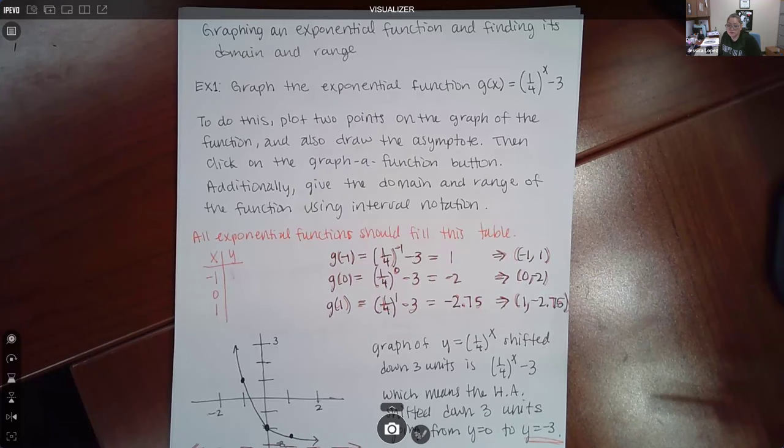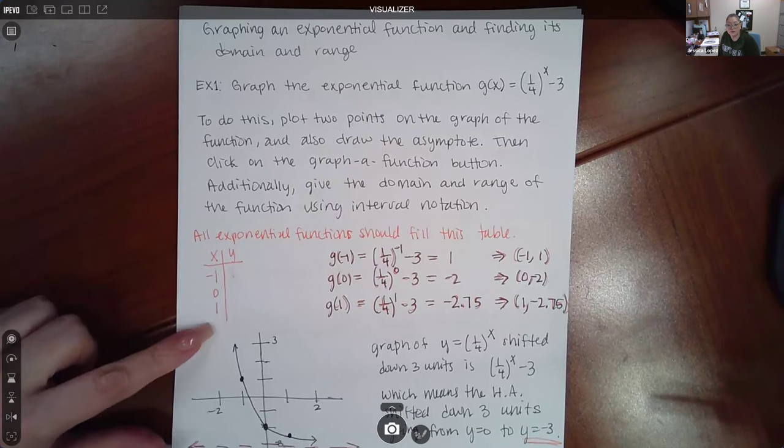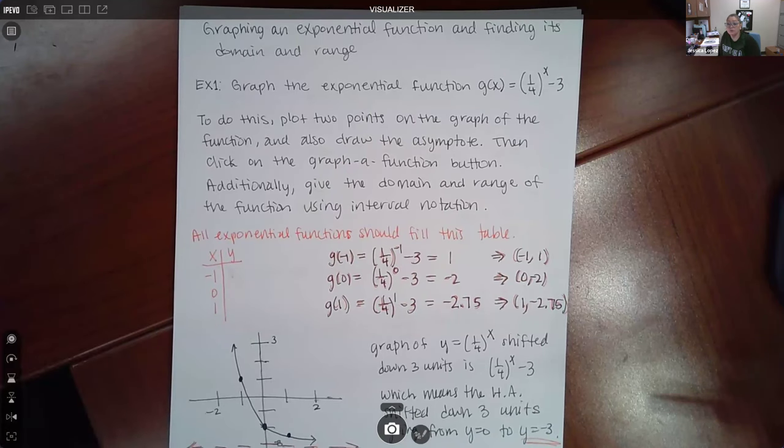All exponential functions should fill this table: negative one, zero, one, which does provide three points instead of two. However there's some special situations where you will only be able to get two values and we'll talk about those in a little bit.